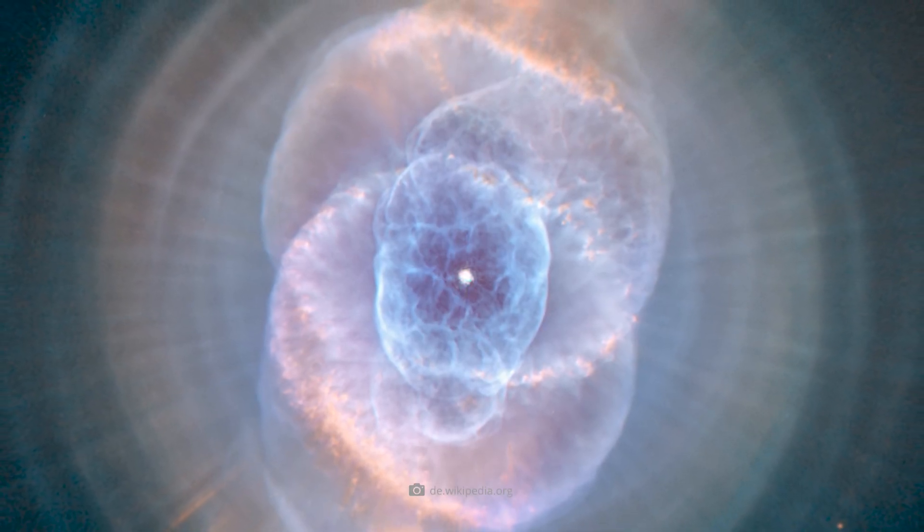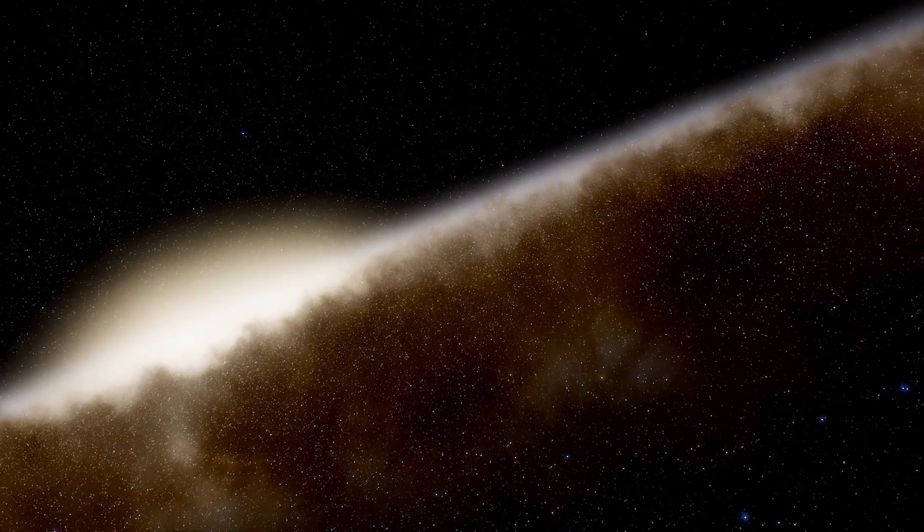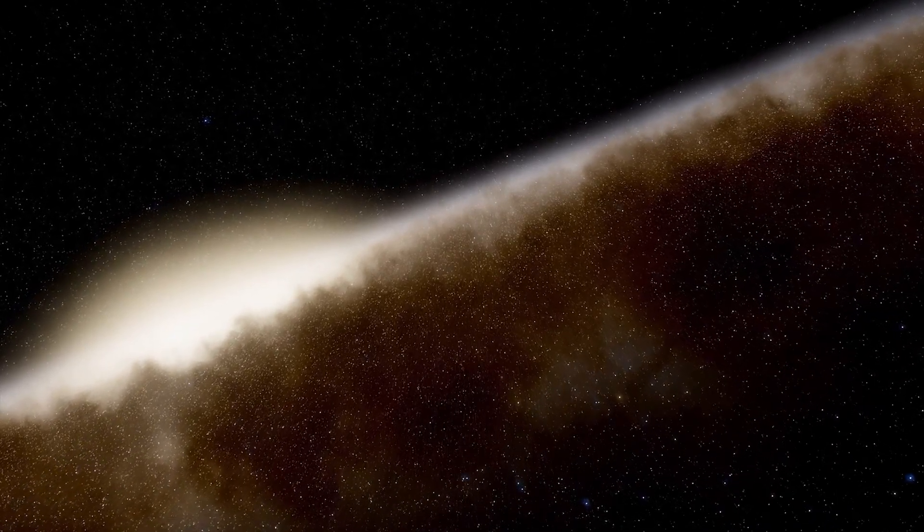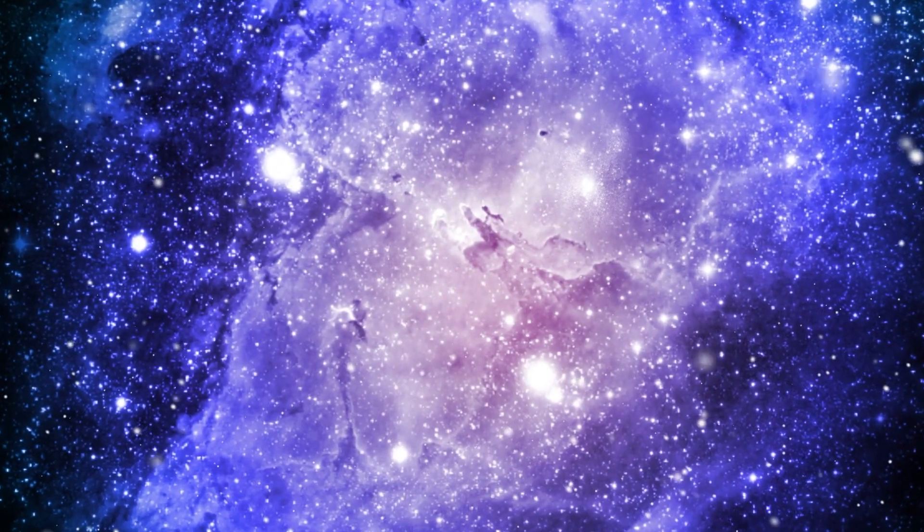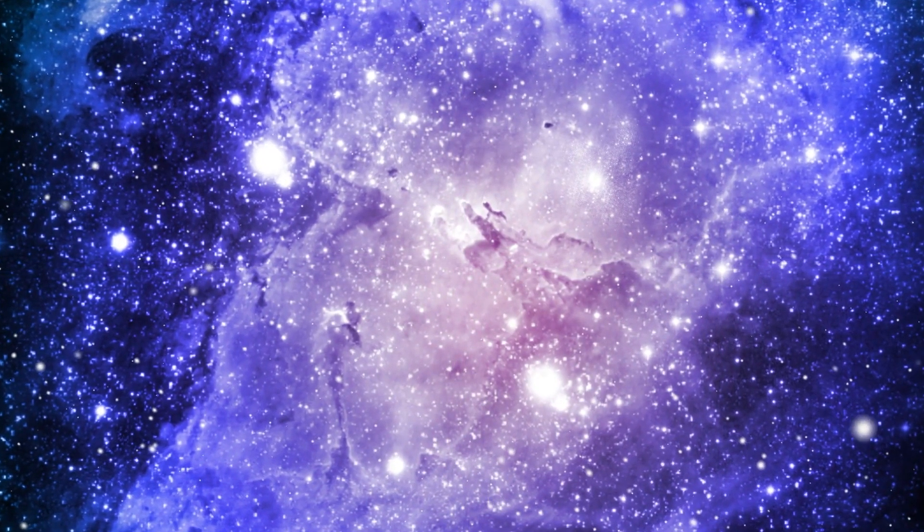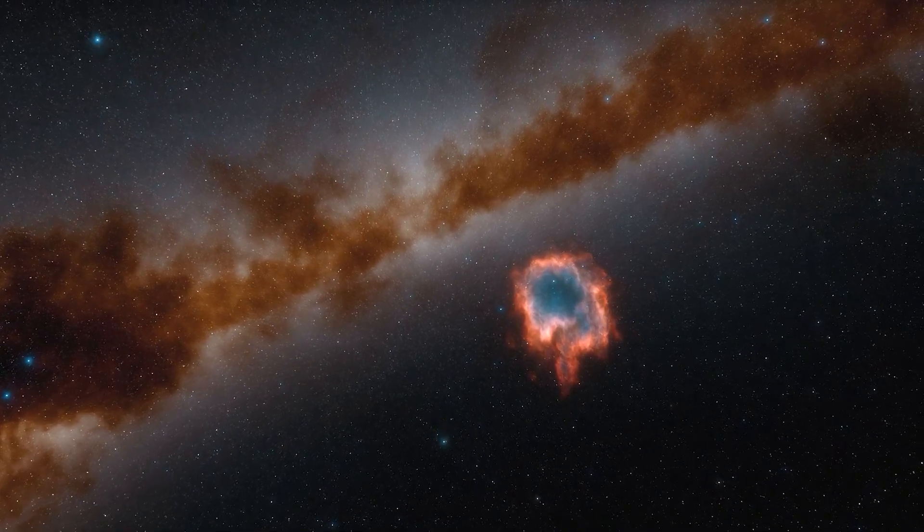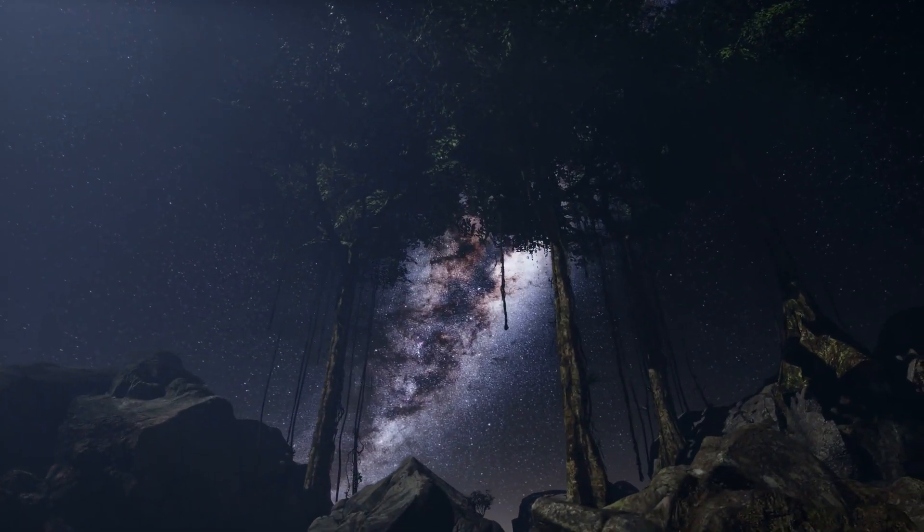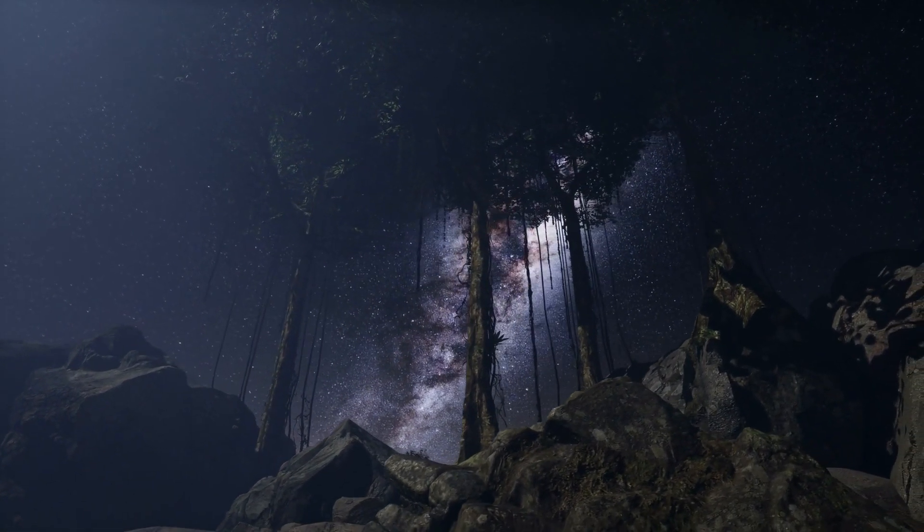However, the concentric rings around the inner nebula are an unsolved mystery. According to the current findings, these rings were ejected in intervals of several hundred years, an unusual time span that cannot be classified in known schemes. Typically, such heat-induced pulsations occur at intervals of tens of thousands of years at the outset, with smaller events typically recorded at the surface only every few decades.